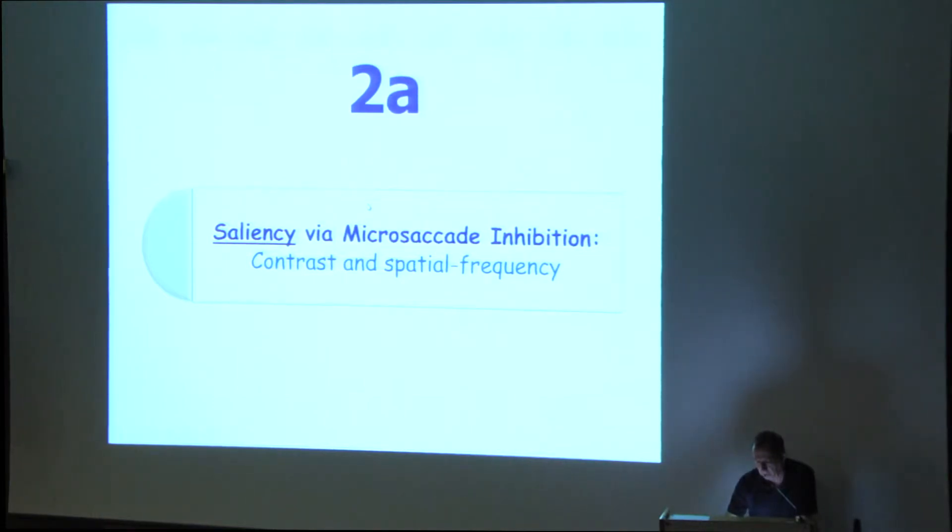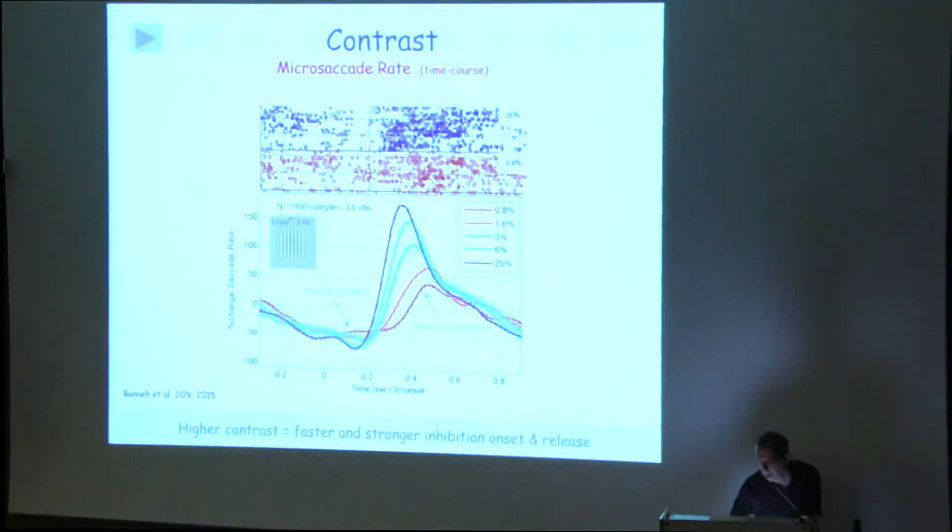It happens for visual and auditory as well. Here there is the visual case from one dataset. It's not specific. Some of the data we collected, visual example in blue and auditory in red. And now we get to the things we can measure with this effect. The first thing is to look for saliency. We can measure the effect of contrast and the effect of spatial frequency, which is sort of equivalent to contrast because the contrast sensitivity changes with spatial frequency.